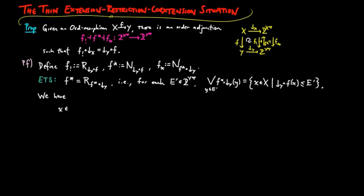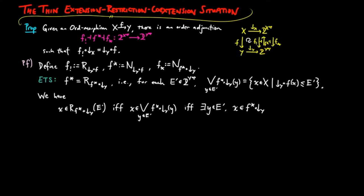We have x as an element of the realization on f upper star of the down segment on y of e-prime if and only if x is an element in the join of f upper star of the lower segment of y on element y, where y ranges over e-prime, if and only if there exists a y in e-prime such that x is an element in f upper star of the lower segment on y on element y — since the join is a union of elements — and this is true if and only if there exists a y in e-prime such that f lower shriek of the lower segment on x on element x is less than or equal to the lower segment on y on element y, by adjunction.